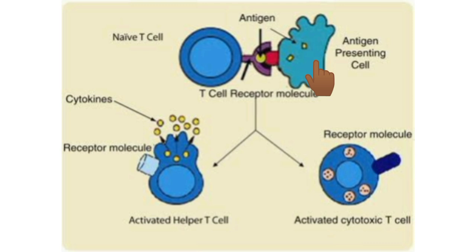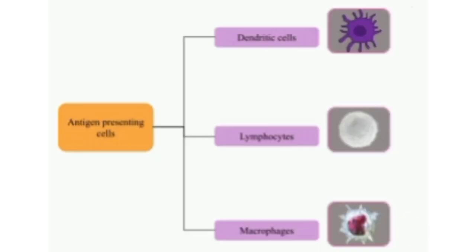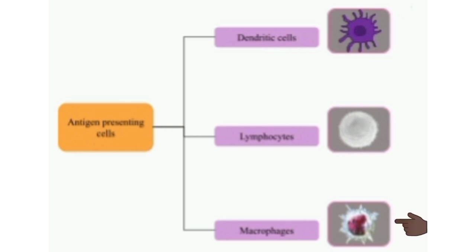Antigen-presenting cells are special cells that induce the release of antigenic materials from invading organisms and present them to the helper T cells. They are of three types: macrophages, dendritic cells, and B lymphocytes. Among these, macrophages are the major antigen-presenting cells. Macrophages are large phagocytic cells which digest invading organisms to release the antigen, and are present alongside lymphocytes in almost all lymphoid tissues. Dendritic cells are non-phagocytic in nature.